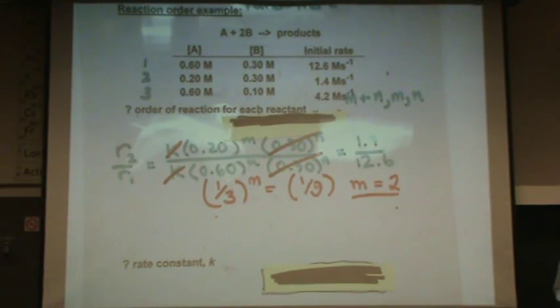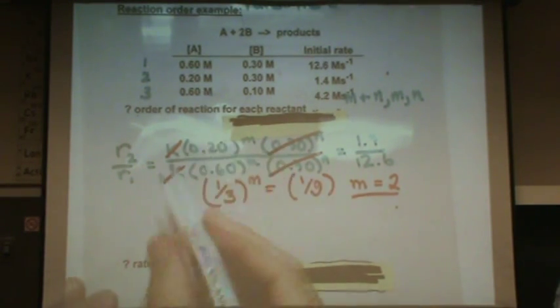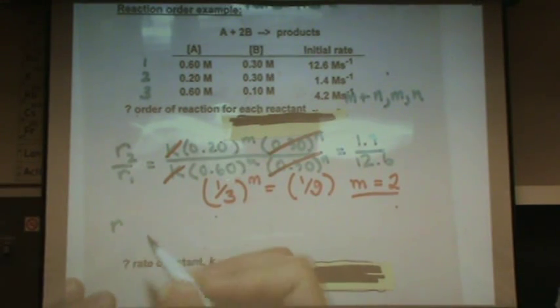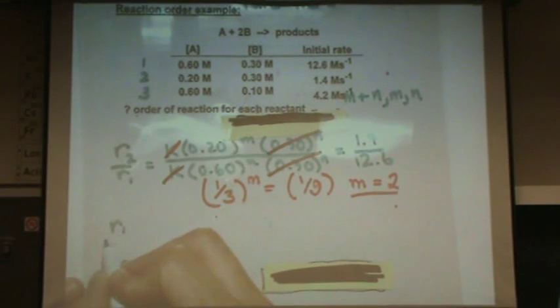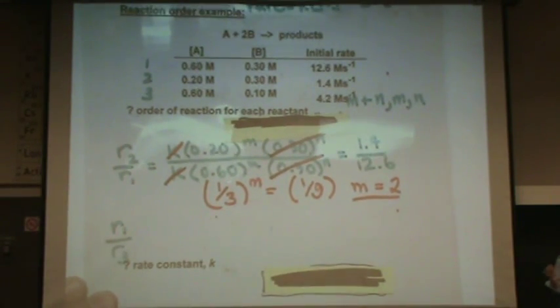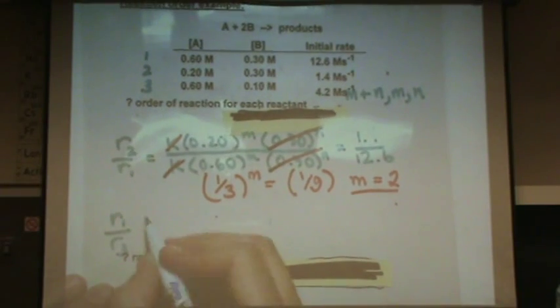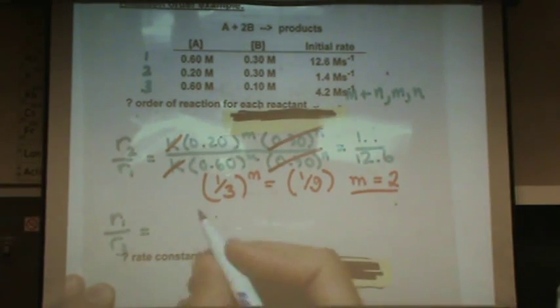Now let's find n. So to find n, what two reactions am I, or what two of these three am I going to compare? I have to compare one and three to get A to cancel with A at 0.6. And again, it doesn't matter which one I put in the numerator, which one I put in the denominator, you'll get the same answer.